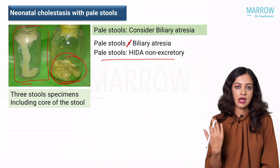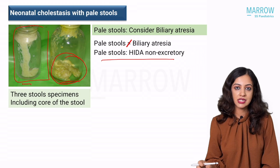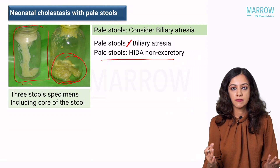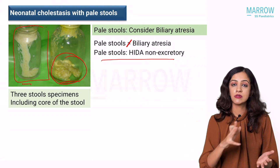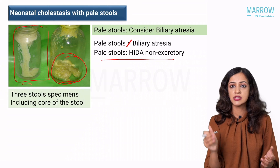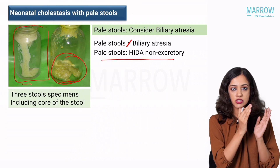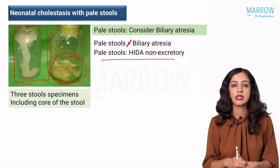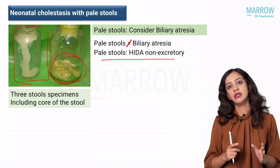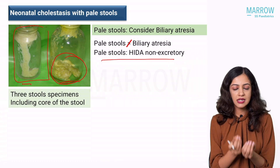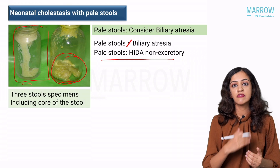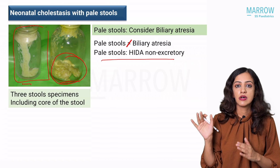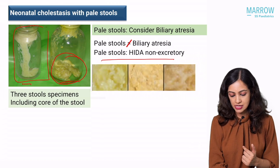HIDA would show whether bile is getting secreted into the intestines or not, and if the stools are clearly pale, HIDA is not going to give you any new information irrespective of the etiology — whether it is biliary atresia, choledochal cyst, or severe intrahepatic cholestasis preventing bile from entering the intestine. In all these cases, the HIDA is going to be non-excretory. So the HIDA scan is useless in a baby with clearly pale stools. You should think of further investigations to confirm the etiology rather than waste time priming this baby for five days and sending for HIDA scan.